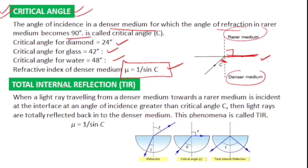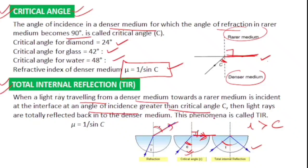When the angle of incidence is greater than the critical angle, the light is totally reflected back into the denser medium — this is called total internal reflection. Conditions: light must travel from a denser to a rare medium, and the angle of incidence must be greater than the critical angle. The formula for refractive index is μ = 1/sin C.